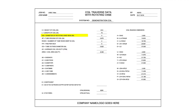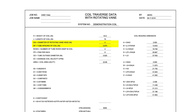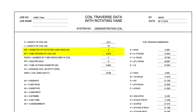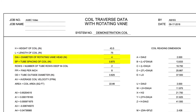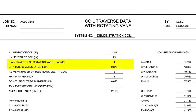The diameter of the rotating vane head and the tube spacing of the coil was not included in the AHU-1 submittal data. These measurements were taken while in the field and recorded into the coil traverse data with rotating vane form.